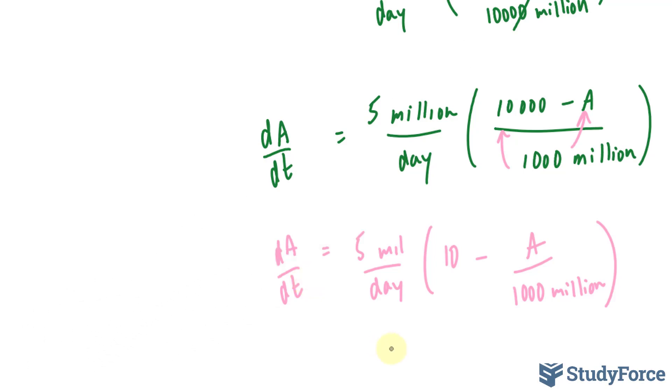To find your constant, you would set A times zero is equal to zero. Because at the very beginning, you don't have any new currency in circulation. And that's what it represents.